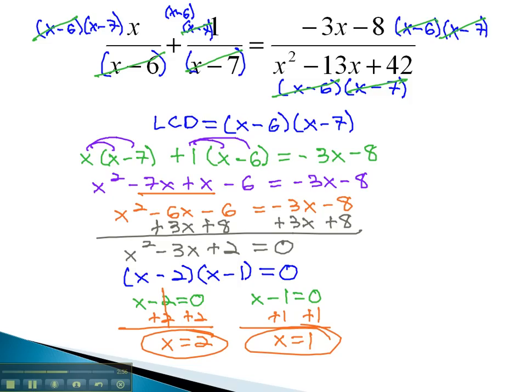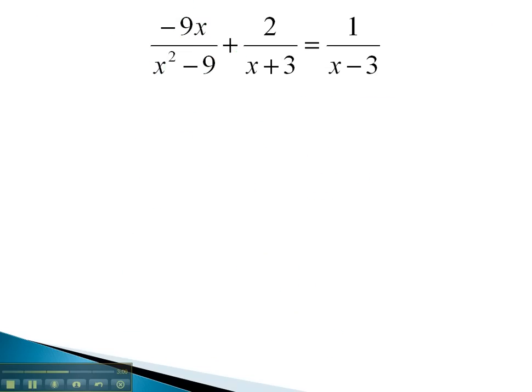Let's try another example, where we clear the denominators by first factoring to find the least common denominator. In this problem, the x squared minus 9 needs to be factored. That's a difference of squares. It's x plus 3, x minus 3. The other fractions have x plus 3 and x minus 3 factors as well, so all we need for the least common denominator is x plus 3 times x minus 3.